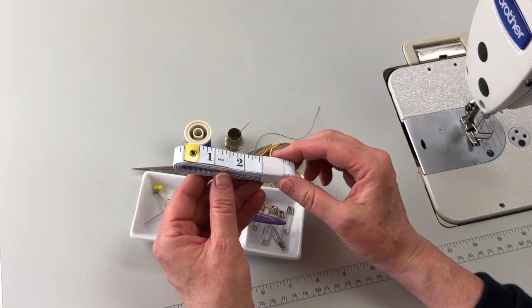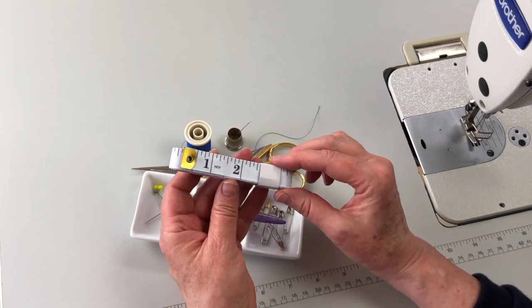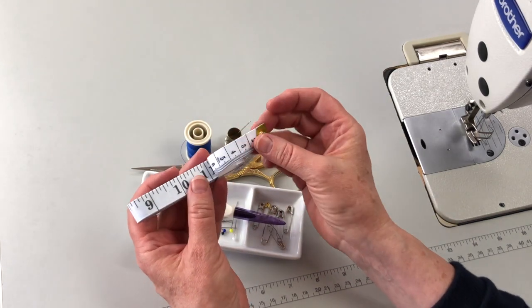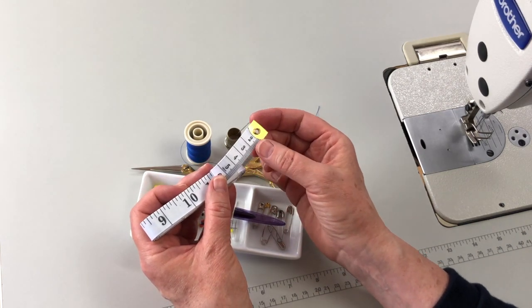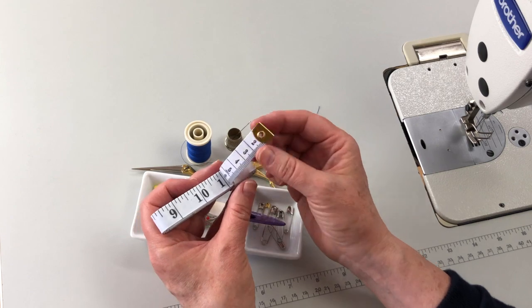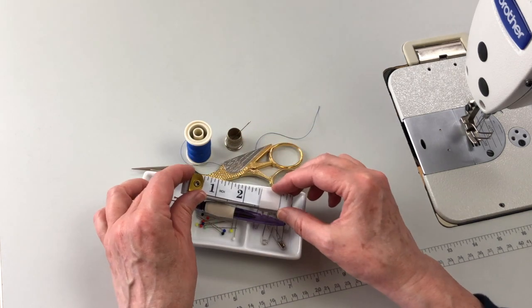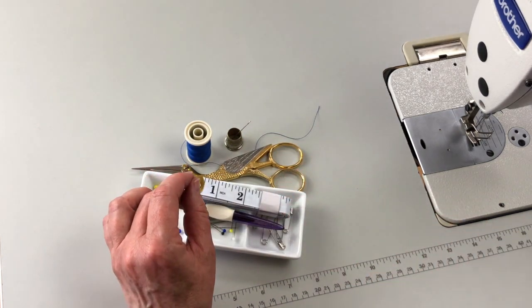Next, we have a measuring tape. Now, this particular one has units of measure in both centimeters and inches, and the better ones are made of a synthetic fiber, like a fiberglass, and that material will never stretch or tear.